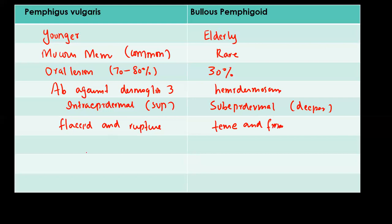The Nikolsky sign is positive in patients with Pemphigus Vulgaris, whereas in patients with Bullous Pemphigoid, it is negative.